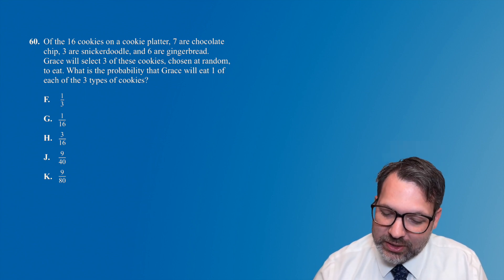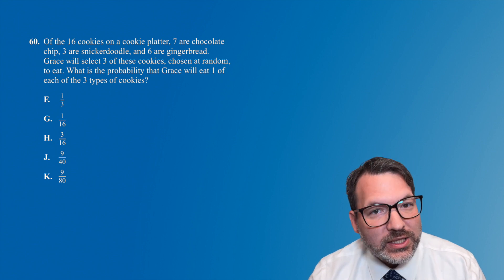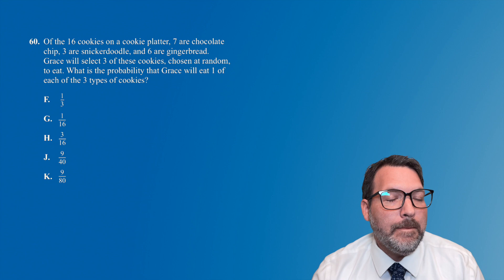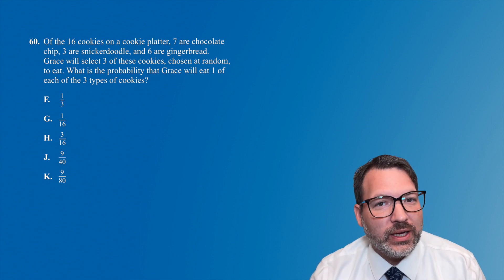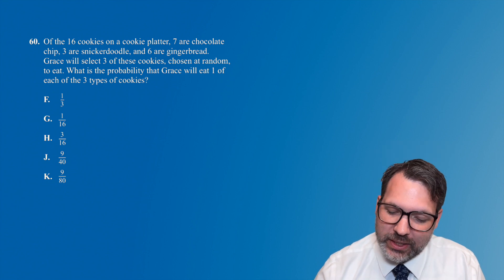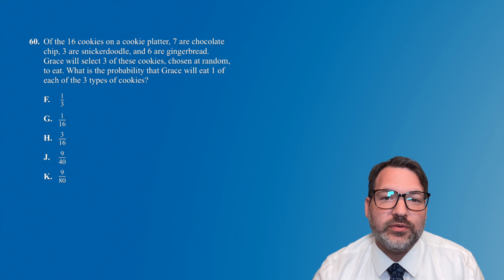Let's take a look. Of the 16 cookies on a cookie platter, seven are chocolate chip, three are snickerdoodle, and six are gingerbread. By the way, this is inspired by the last question from the December 2021 ACT, but not exactly that question, because I don't want to get in trouble with the copyright police. Grace will select three of these cookies, chosen at random, to eat. What is the probability that Grace will eat one of each of these three types of cookies?